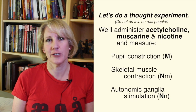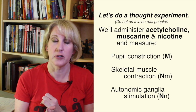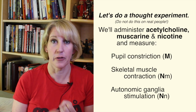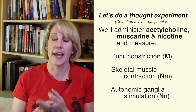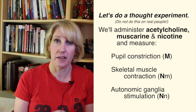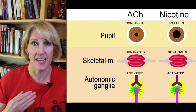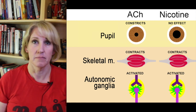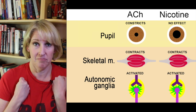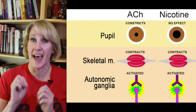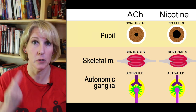Let's look at three things that acetylcholine does in the body. Acetylcholine causes your pupil to constrict, it causes skeletal muscles to contract, and it also activates autonomic ganglia and the adrenal medulla. If you give nicotine to a patient, you'll see the skeletal muscle contraction and you'll see the activation of autonomic ganglia, but you won't see the pupillary constriction.